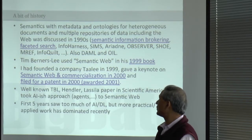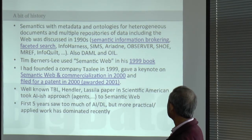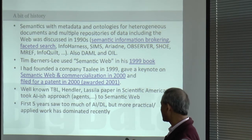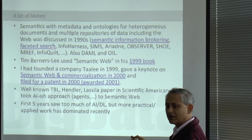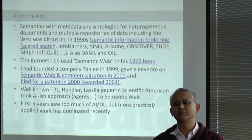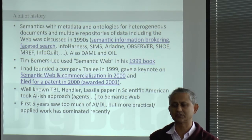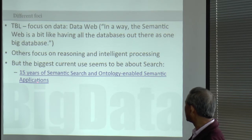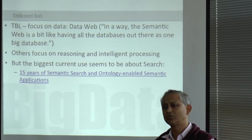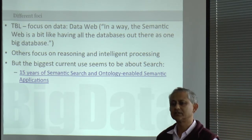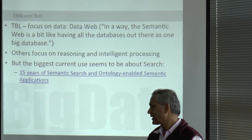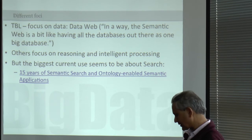As for the history of semantics — the semantic web term was coined in a 1999 book, but work on semantics in terms of information, data, and the web had been there by mid-1990s, with several projects along that line. There is an extensive history and my personal perspective on 15 years of movement in semantics at a linked resource, as well as from my LinkedIn profile.